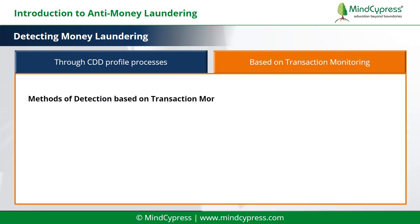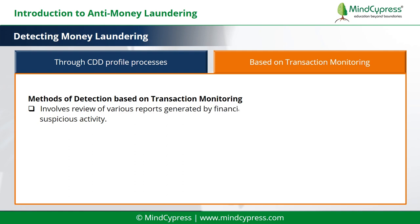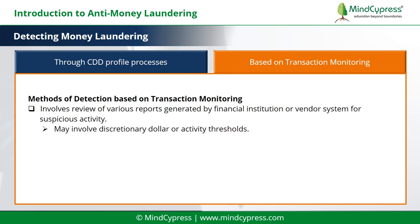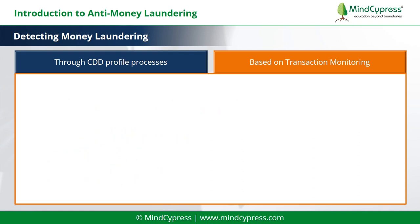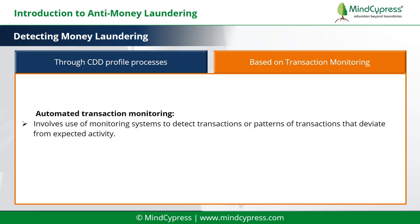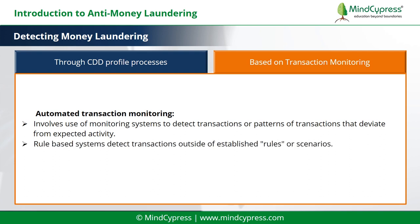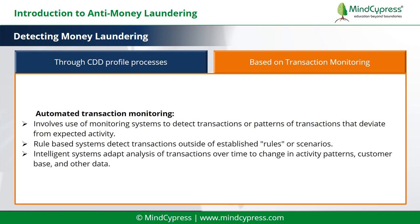Methods of detection based on transaction monitoring: Manual transaction monitoring involves review of various reports generated by financial institution or vendor systems for suspicious activity. It may involve discretionary dollar or activity thresholds. Examples include currency activity records, funds transfer records, monetary instrument records, and active account reports. Automated transaction monitoring involves use of monitoring systems to detect transactions or patterns of transactions that deviate from expected activity. Rule-based systems detect transactions outside of established rules or scenarios. Intelligent systems adapt analysis of transactions over time to changes in activity patterns, customer base, and other data.